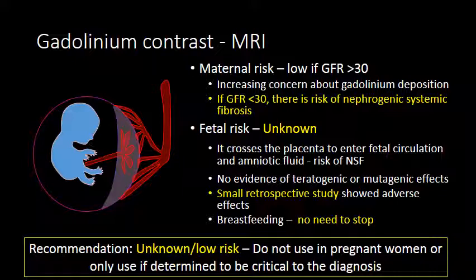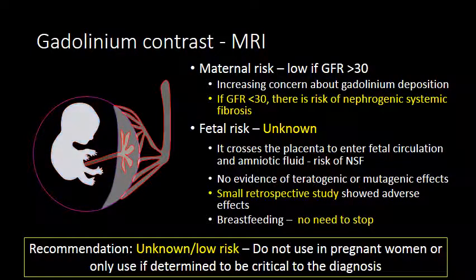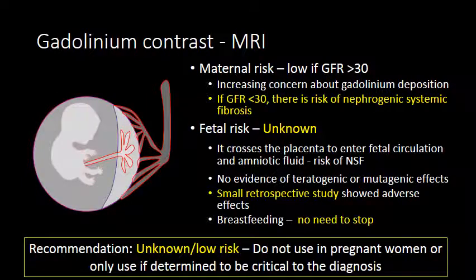The fetal risk of administration of IV gadolinium contrast is relatively unknown and poorly studied. What we do know is that it crosses the placenta, enters fetal circulation, and is then excreted through the kidneys and urinary bladder into the amniotic fluid. This results in long-lasting exposure of the fetus to IV gadolinium contrast. While there is no evidence of teratogenesis or mutagenesis, small retrospective studies have shown increased adverse effects, predominantly related to rheumatoid, inflammatory, and skin conditions, as well as a small increase in stillbirths. Because of this, and the relative lack of data, we do not recommend or routinely use intravenous gadolinium contrast during pregnancy.